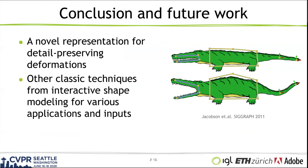To conclude, we propose a novel representation for shape deformation that is detail preserving by construction. And we envision that more classic interactive shape modeling techniques, such as the cage deformation used in this paper, can be incorporated into neural networks for different types of inputs and applications. Thank you for your attention.